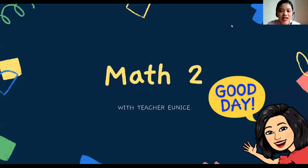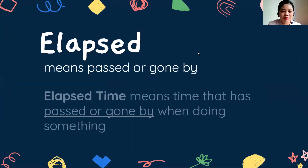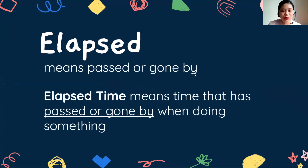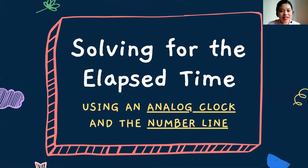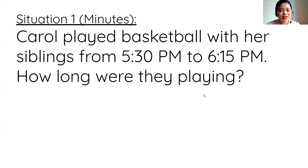Hi everyone, this is teacher Eunice and we're here to review solving for elapsed time. We already know that elapsed time means the time that has passed or gone by when doing something. It could also mean the time in between the start and end times. Now let's go ahead and solve for elapsed time using the number line. Previously we used the analog clock as a way to solve for it — if you haven't watched that video, you can check it out.